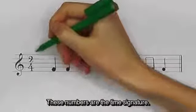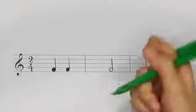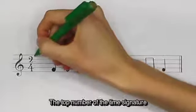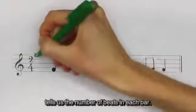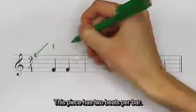These numbers are the time signature. They come after the clef and before the notes on the staff. The top number of the time signature tells us the number of beats in each bar. This piece has two beats per bar.